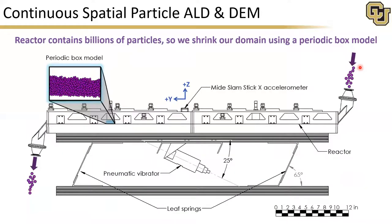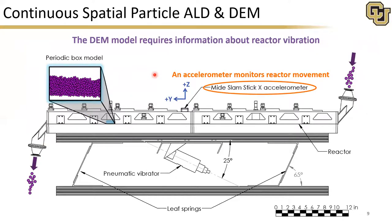We also need to make some simplifications. This reactor contains billions of particles, so we shrink our domain using a periodic box model — instead of modeling all particles throughout the entire reactor length, we just look at a single periodic slice. This DEM model still requires information about reactor vibration, so an accelerometer was fitted to the top of the reactor to monitor reactor movement, and this data is then used as an input to the DEM model.